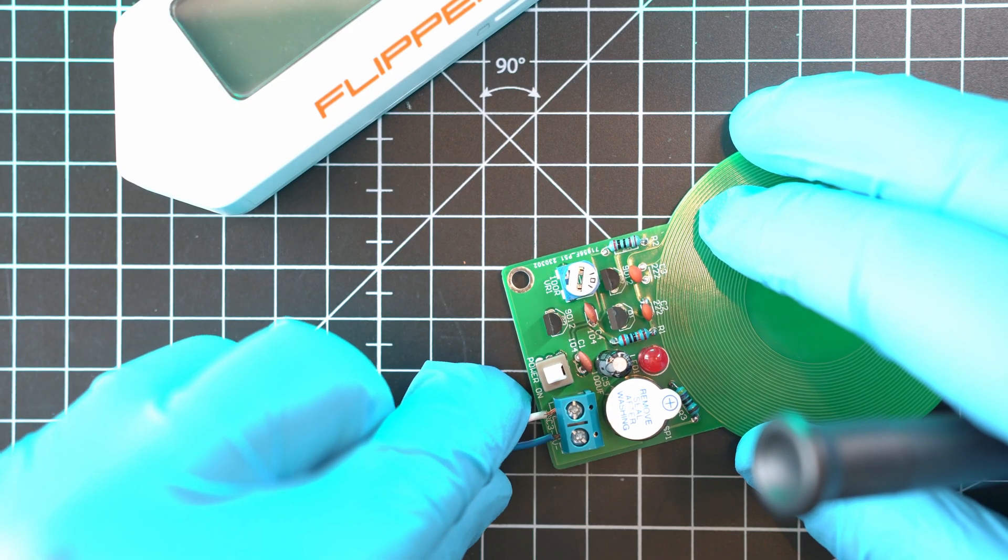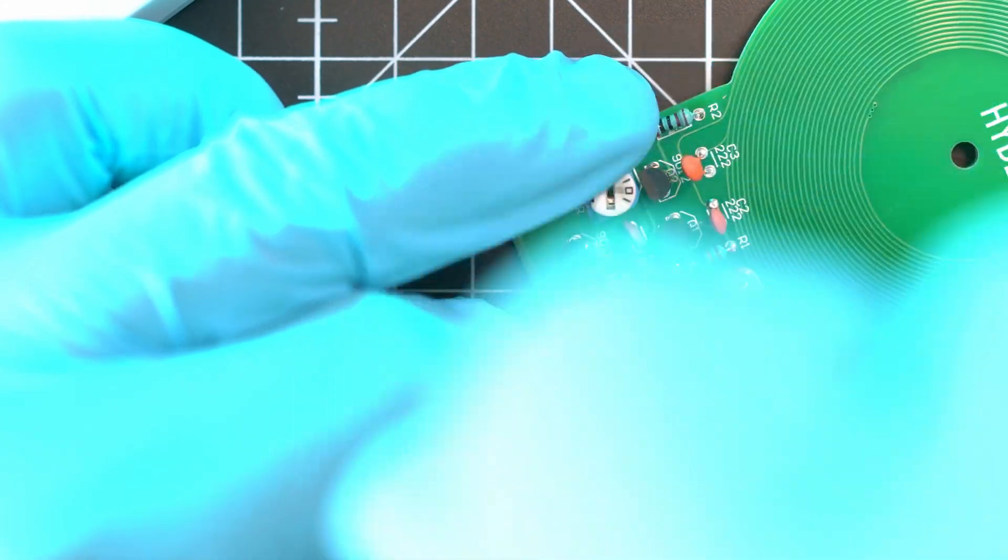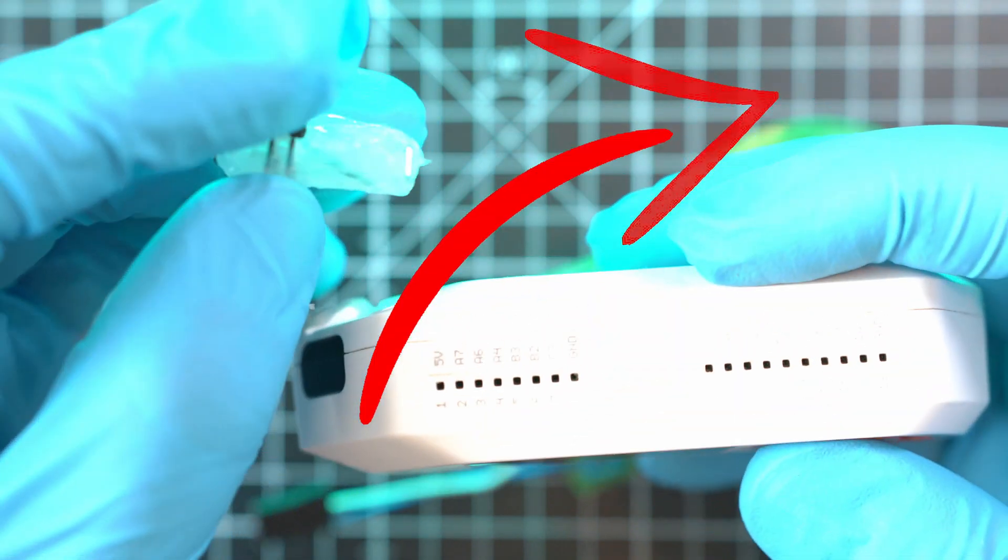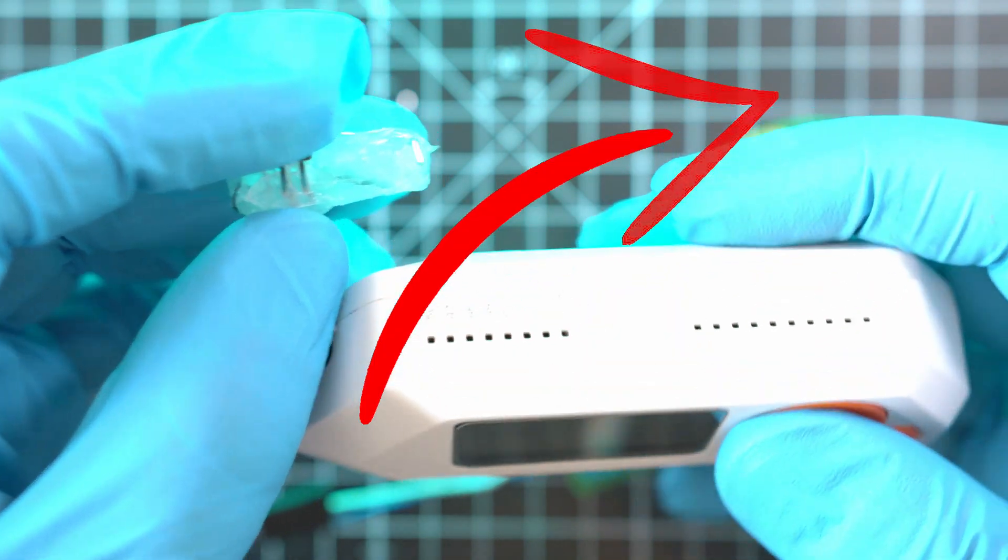Connect 2 wires, 5 volts and ground to this blue housing and to the Flipper Zero. I use my servo tester module that I built, video is here. So 5 volts and ground.